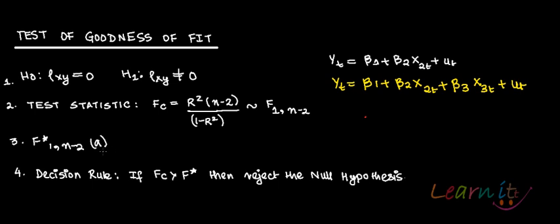Now why does it follow the F-distribution, and how you are getting this F-distribution — I'm not getting into it right now. In some other recording we'll talk about why it follows the F-distribution with one degree of freedom for the numerator and n minus 2 degrees of freedom for the denominator.